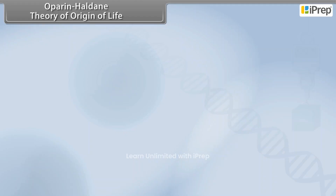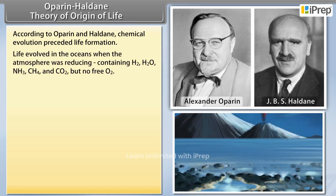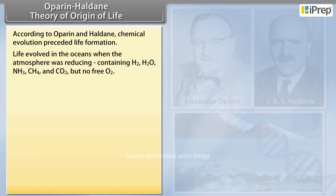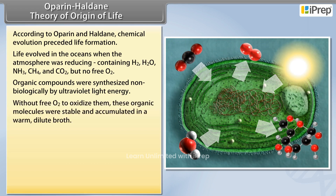According to the Oparin-Haldane theory of origin of life, chemical evolution preceded life formation. Life evolved in the oceans when the atmosphere was reducing, containing H2, H2O, NH3, CH4, and CO2, but no free O2. Organic compounds were synthesized non-biologically by ultraviolet light energy, and without free O2 to oxidize them, these organic molecules were stable and accumulated.